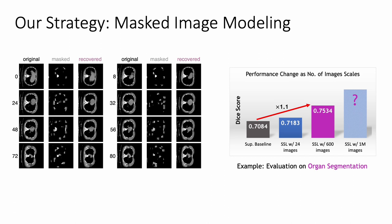An obvious observation is that masked image modeling can effectively improve segmentation accuracy compared to the supervised baseline. More importantly, this advantage becomes even more pronounced as the number of images increases. We now achieve a Dice score of 75% with only 600 images — imagine what we could achieve with a million images as more public data becomes accessible.